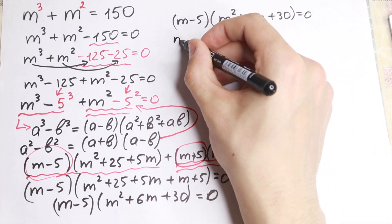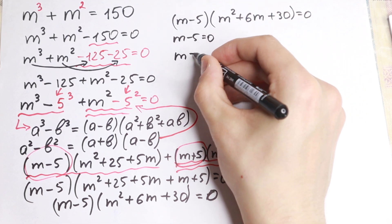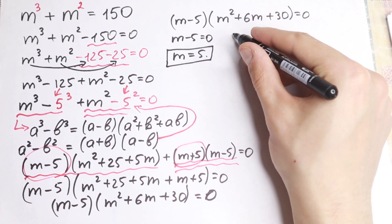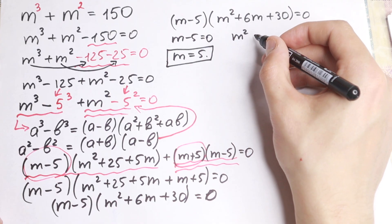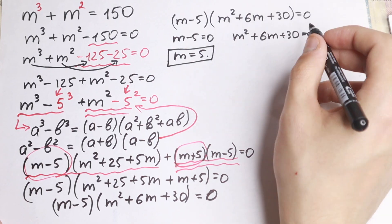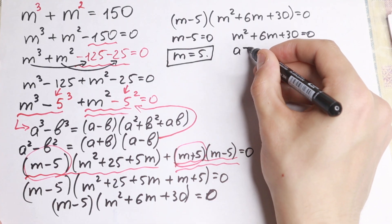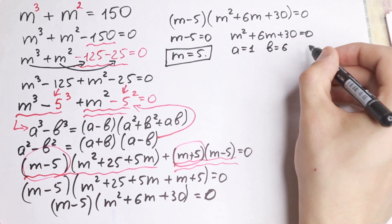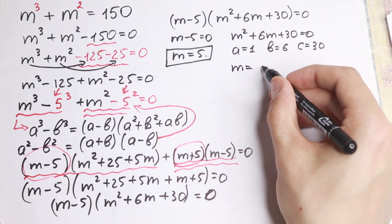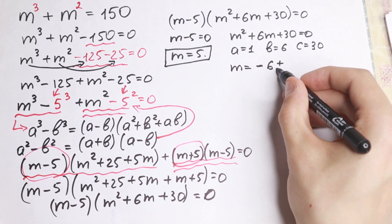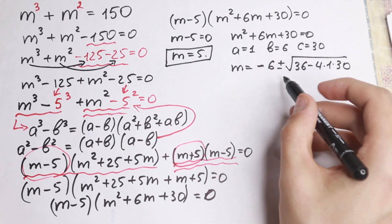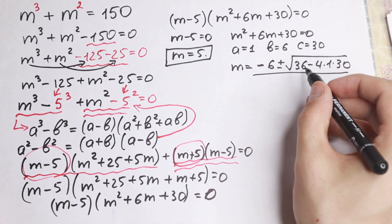We know that if we have a product equal to zero, then one of the parentheses equals zero. So (m minus 5) equals zero gives us m equals 5 — this is our first root. And here we will have the second and third roots from m² plus 6m plus 30 equals zero. Using the quadratic formula with a equals 1, b equals 6, c equals 30: m equals (minus b ± √(b²−4ac)) / 2a.